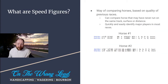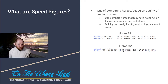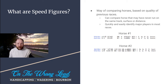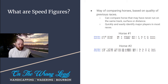So first off, let's talk about what speed figures are. Speed figures are a way of comparing horses based on the quality of previous races. Obviously if a horse has never run before you're not going to have a speed figure, but once horses have run a few times you're going to get these figures. A speed figure is effectively a number assigned to that performance, and every single major company that creates speed figures — and there are a bunch of them — has a different sauce, a different special way that they create these figures.